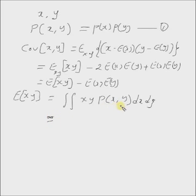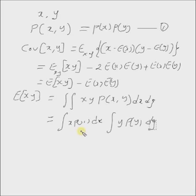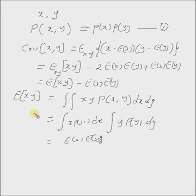Since p(x, y), the joint density, is actually the product of p(x) and p(y), this integral can be written as the integral of x times p(x) dx, multiplied by the integral of y times p(y) dy. Examining these integrals, these are the definitions of expectation of X and expectation of Y respectively. So the product becomes expectation of X times expectation of Y.